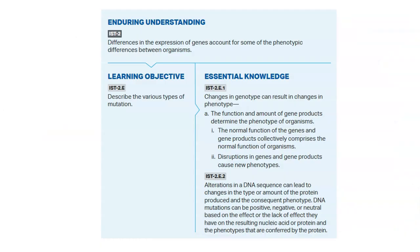These are the enduring understandings and learning objectives from AP Classroom. Differences in the expression of genes account for some of the phenotypic differences between organisms. This learning objective is to describe the various aspects of mutation and how mutations lead to a change in phenotype, starting with genotype. The function and amount of gene products determine the phenotype of organisms, and disruptions in genes and gene products cause new phenotypes. Alterations in a DNA sequence — mutations — can lead to changes in the type or amount of protein produced and obviously change the phenotype.